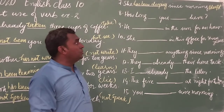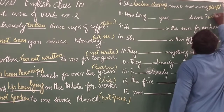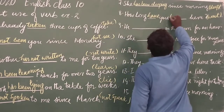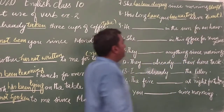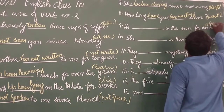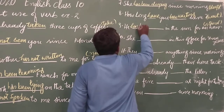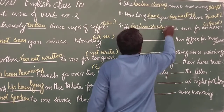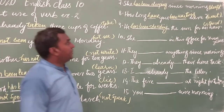Sentence number eight: 'How long dash you dash here' — the verb is 'wait'. So: How long have you been waiting here? Sentence nine: 'He dash in the sun for an hour' — present perfect continuous tense applies. Answer: He has been standing in the sun for an hour.